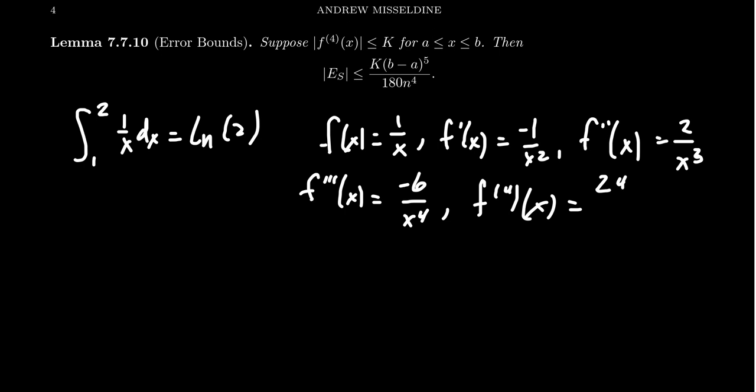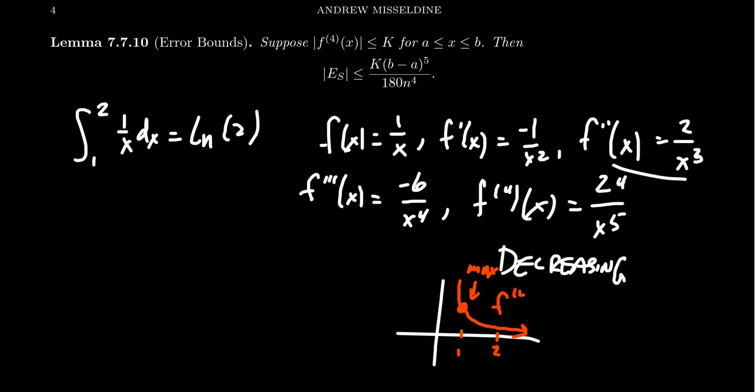This is going to be 24 over x to the fifth. Much like the second derivative here, this function is always decreasing on its interval. The graph of this thing is going to look something like the following. This is not perfectly drawn to scale by any means, but this thing will be decreasing. And so this k value is going to show up right here at this maximum value at the left endpoint. And so this is simply just the fourth derivative evaluated at 1, which we end up with 24. So that's what we can use for our k value.